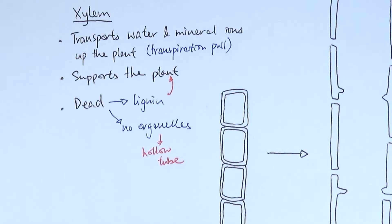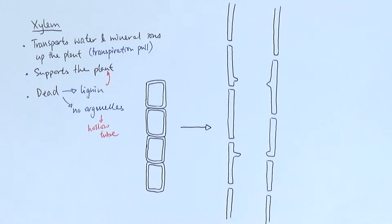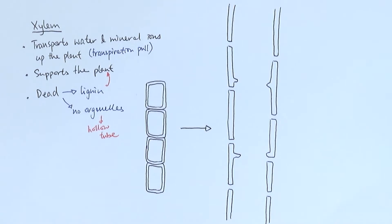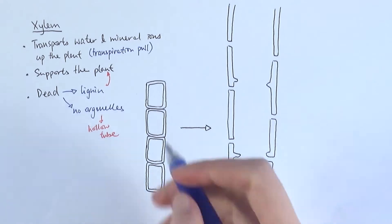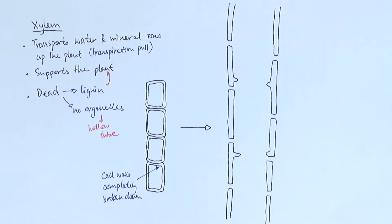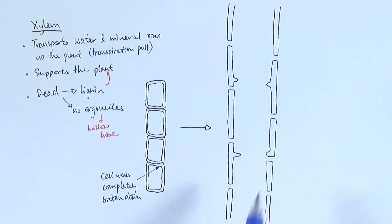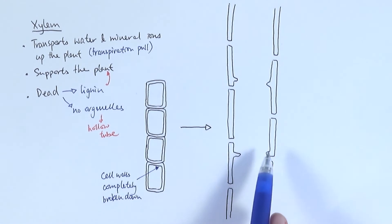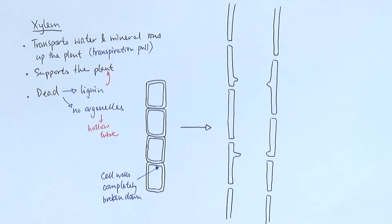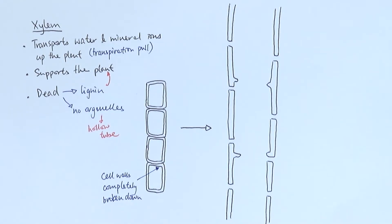Let's now have a look at the detailed structure of the xylem. Originally, both xylem and phloem are a stack of plant cells. For the xylem, the first thing that happens is that the cell wall starts to break down. The cell walls in between the cells completely break down in order to form a hollow tube. Sometimes the end of it may not completely break down, but generally speaking the cell wall is gone in order to create that hollow tube and smooth flow of water.